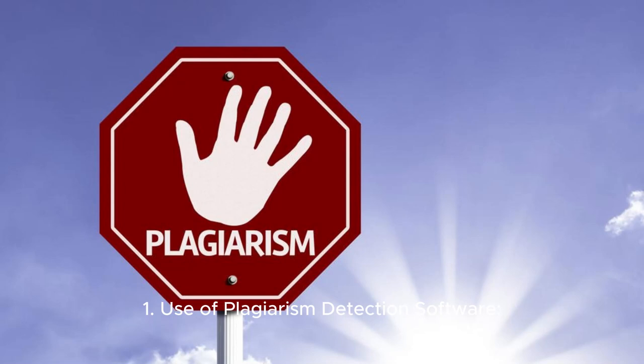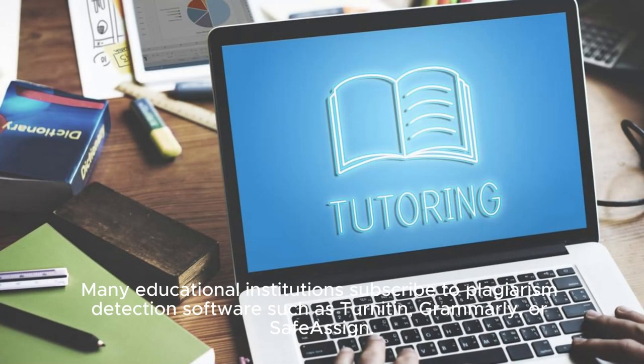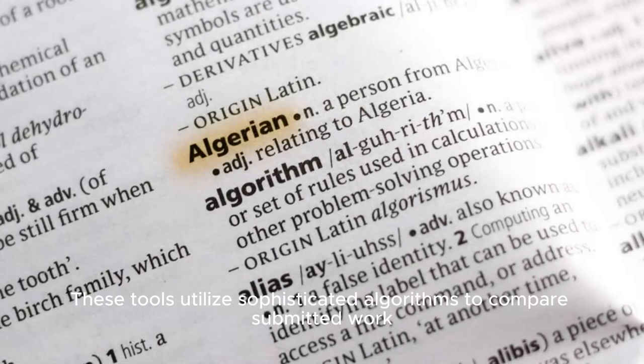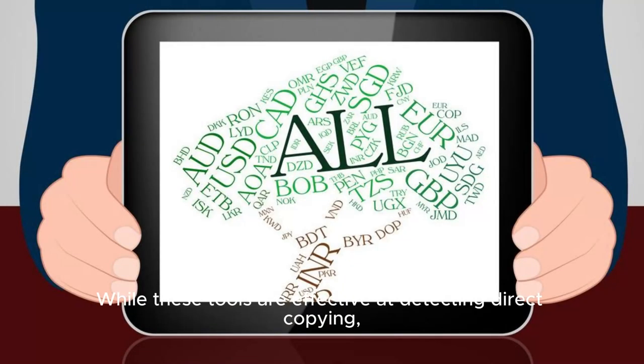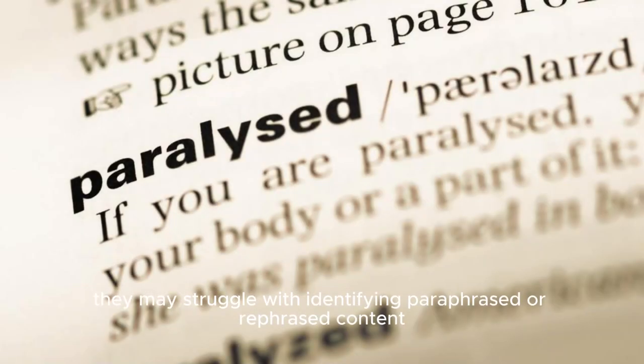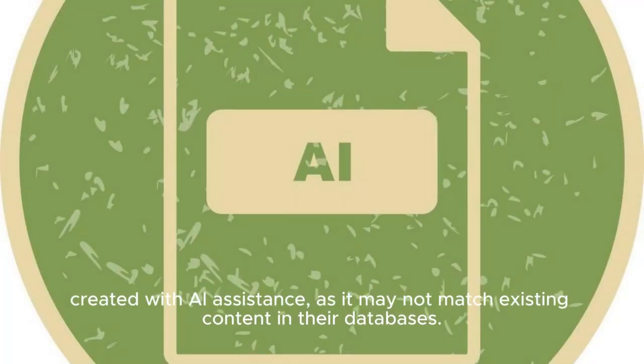Use of Plagiarism Detection Software. Many educational institutions subscribe to plagiarism detection software such as Turnitin, Grammarly, or Safeassin. These tools utilize sophisticated algorithms to compare submitted work against a vast database of academic papers, websites, and other sources to identify similarities. While these tools are effective at detecting direct copying, they may struggle with identifying paraphrased or rephrased content created with AI assistants, as it may not match existing content in their databases.